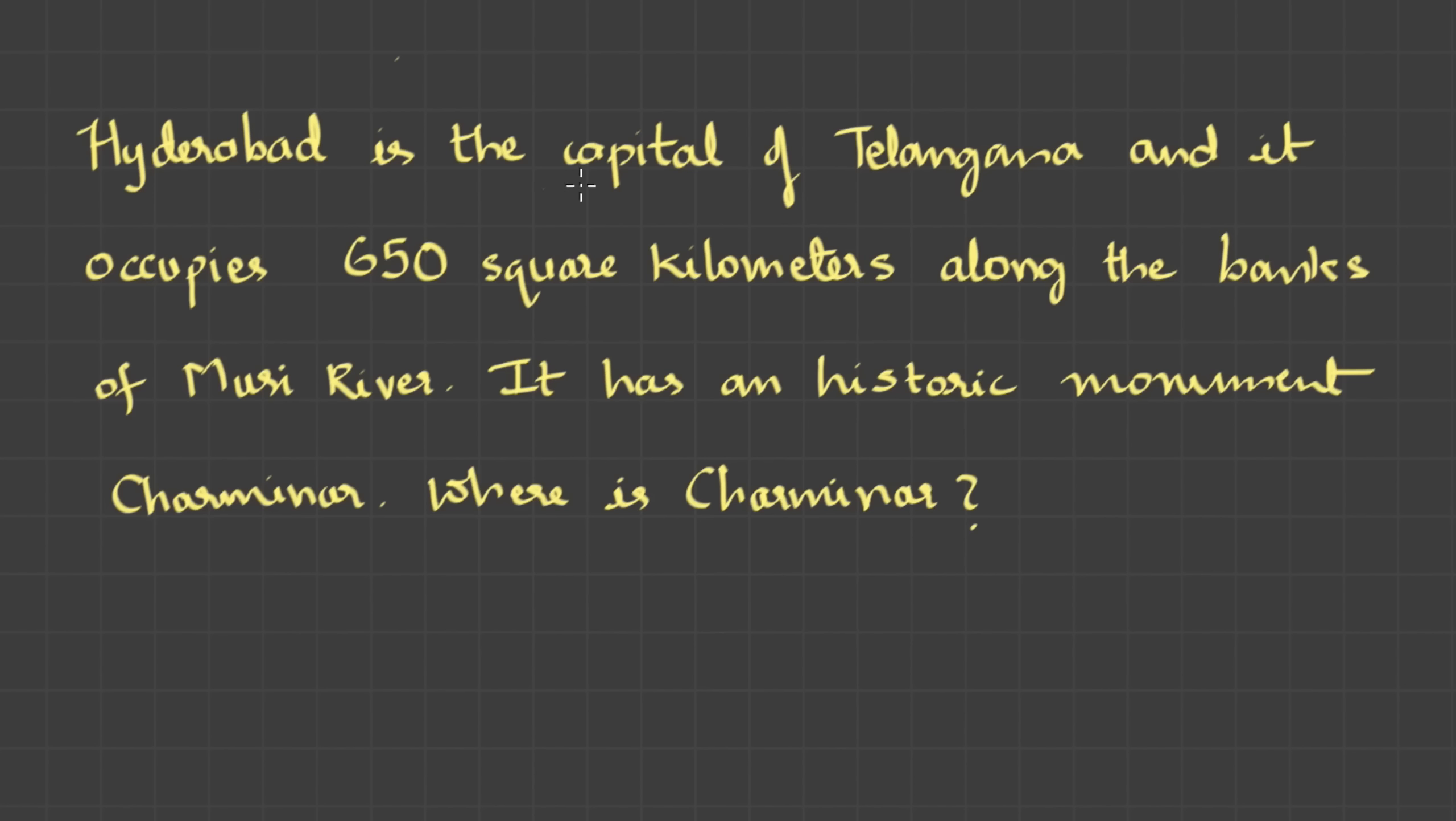I'm basically a Hyderabadi guy. So let me take a few statements about Hyderabad. Hyderabad is the capital of Telangana. And it occupies 650 square kilometers along the banks of Musi River. It has an historic monument, Charminar. Where is Charminar? In this paragraph, if you can carefully analyze, we can split the paragraph to statements. And complex statements with connectives like AND, OR, IF, THEN can be plugged out to make it simple statements. These simple statements are either correct or wrong, or sometimes we can't decide.